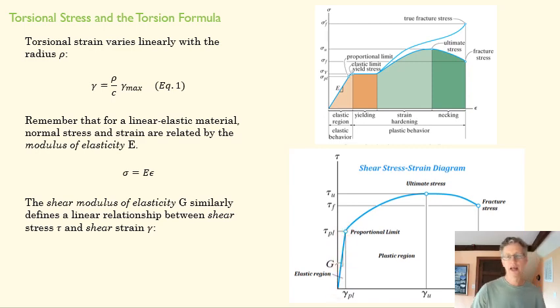G tells us if I put a certain amount of stress on an object, twisting stress, how much deformation am I going to get. If I have a high G, if I have a stiff material, or a material that is stiff in a shear direction, then I can apply a really large stress and not get much deformation. A low G would imply that if I applied that stress, I would get a great big deformation.